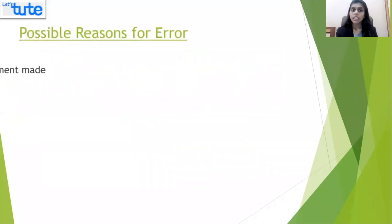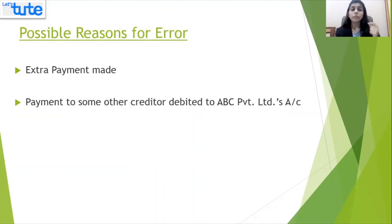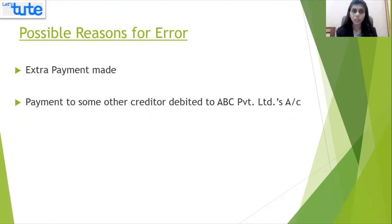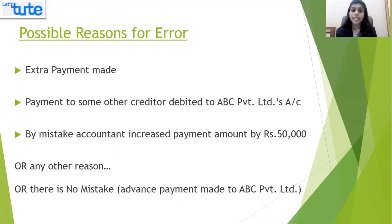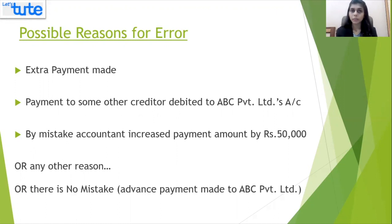Does it mean that you have made an extra payment to ABC Private Limited, or that a payment made to some other creditor was mistakenly debited to ABC Private Limited's account, or by mistake your accountant has increased the payment amount by 50,000? There can be several other reasons, or there can be no error in case you have actually made an advance payment to ABC Private Limited.